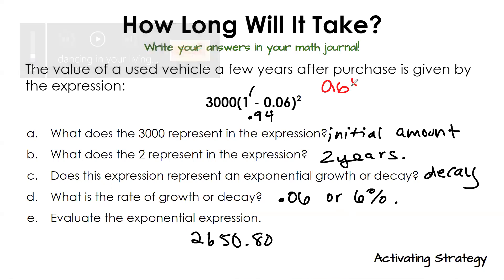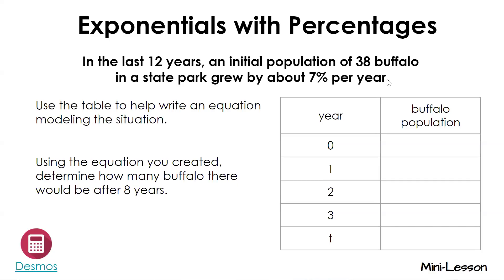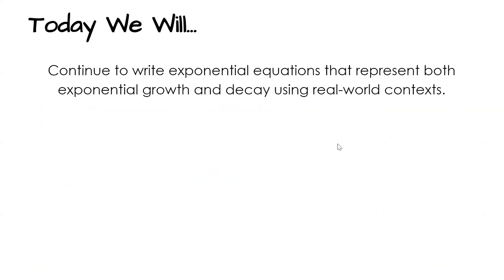We've been talking about this expression: a times b raised to the x. Another way you can write this is a times (1 minus r) raised to the x. These are kind of interchangeable depending on what you're talking about. This is what we call simple interest.